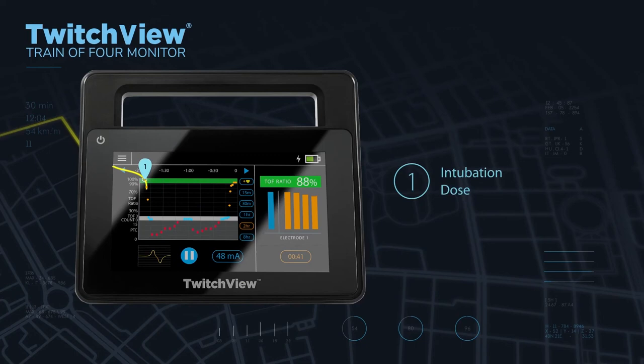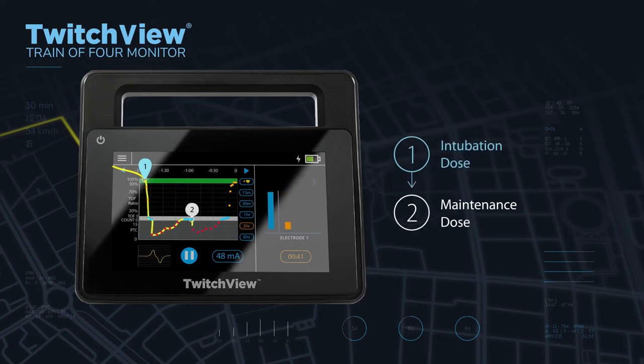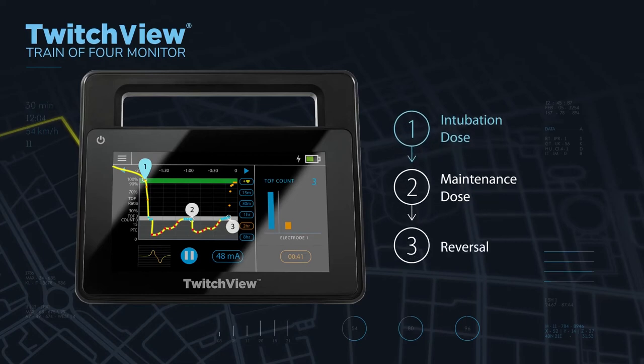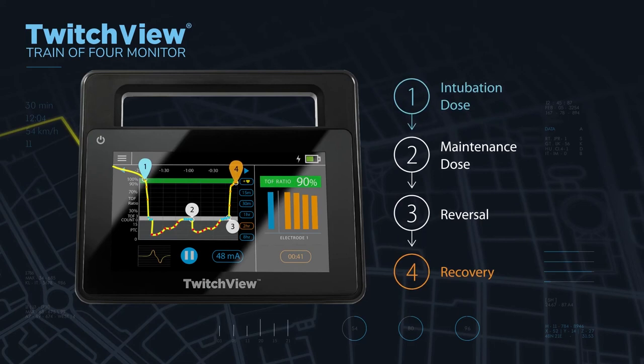Using real-time measurements and the patient-specific trend plot as a guide, you can titrate paralytic to proactively manage a desired depth of block and determine the optimal reversal drug and dosage.